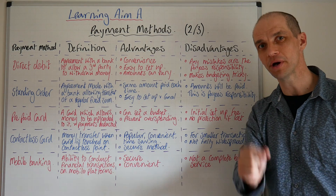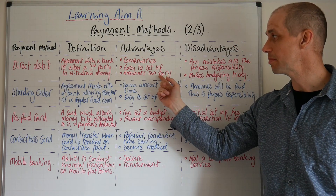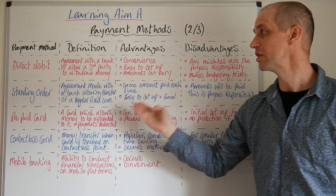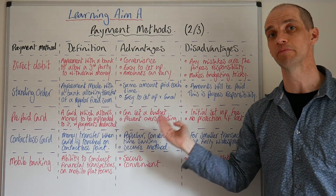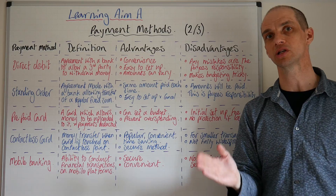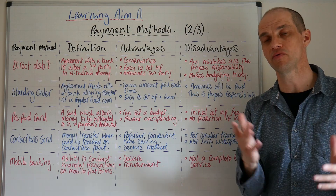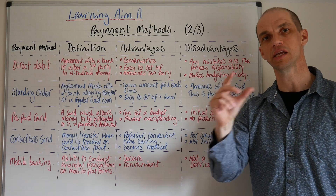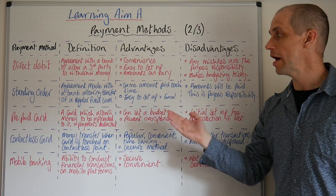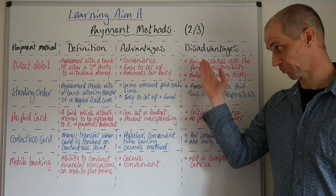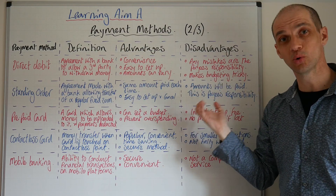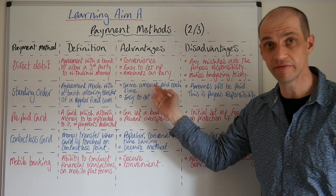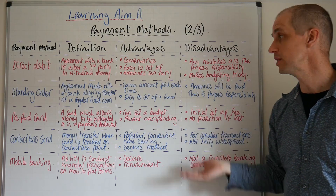Standing orders are similar but different — here the amount is fixed. It's an agreement made with a bank allowing the transfer of a regular fixed sum of money. This could be useful for sorting out rent. If you're renting premises, you might set up a standing order to pay perhaps five hundred pounds per month on the 28th of each month. Again, it's convenient, easy to set up, and always the same amount, which can help your budgeting.